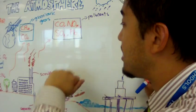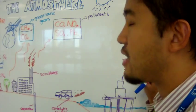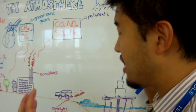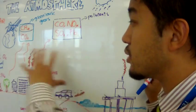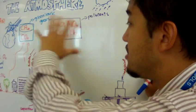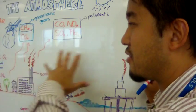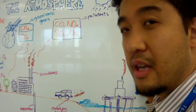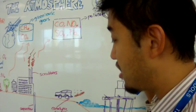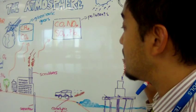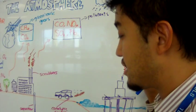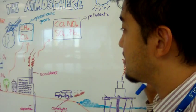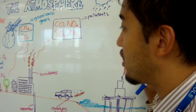Nitrogen oxides — mainly nitrogen dioxide — are also pollutants. Nitrogen dioxide causes photochemical smog, which means the place looks really gray and brown. The air turns gray and brown. It's unsightly and also not good for health.